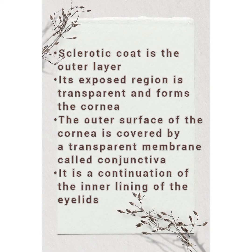The sclerotic coat is the outer layer. Its exposed region is transparent and forms the cornea. The outer surface of the cornea is covered by a transparent membrane called the conjunctiva, which is a continuation of the inner lining of the eyelids.